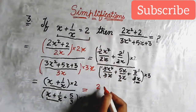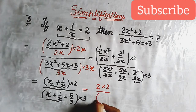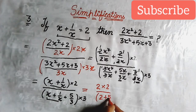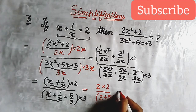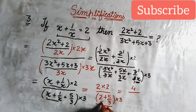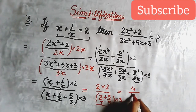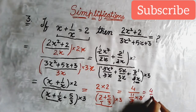We get 2 multiplied by 2 in the numerator, over (2 plus 5 upon 3) multiplied by 3 in the denominator. Taking LCM in the denominator: numerator is 4, denominator is (6 plus 5) upon 3, multiplied by 3, which gives 11. So the answer is 4 upon 11, which is your required answer. Thank you and keep smiling.